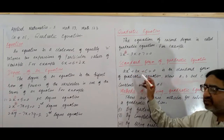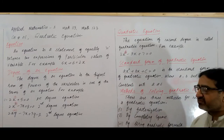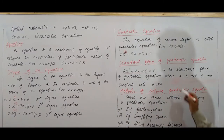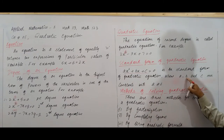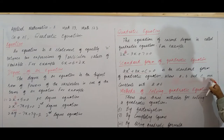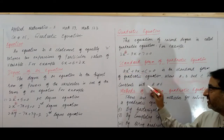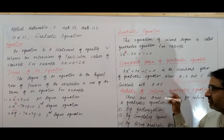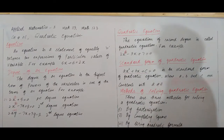The standard form of a quadratic equation is ax² plus bx plus c equals 0. This is the standard form of a quadratic equation, where a, b, and c are constants, and a is not equal to 0.